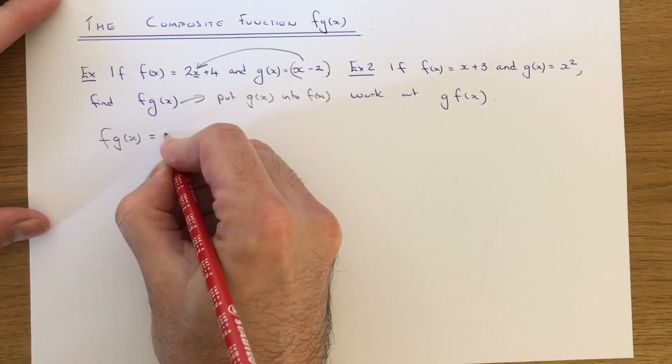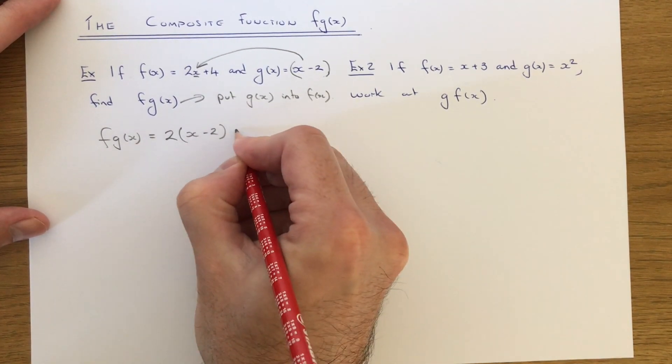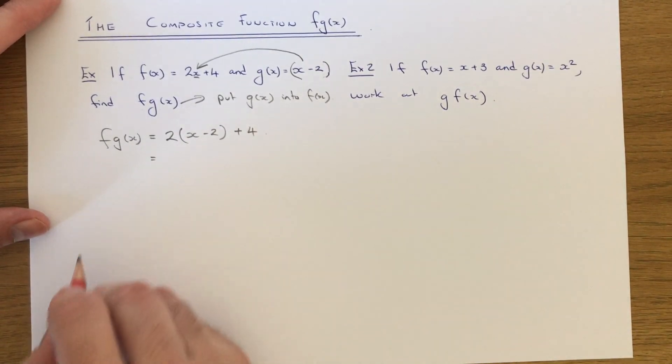So this will give us 2 bracket x minus 2 plus 4. So this is our composite function.